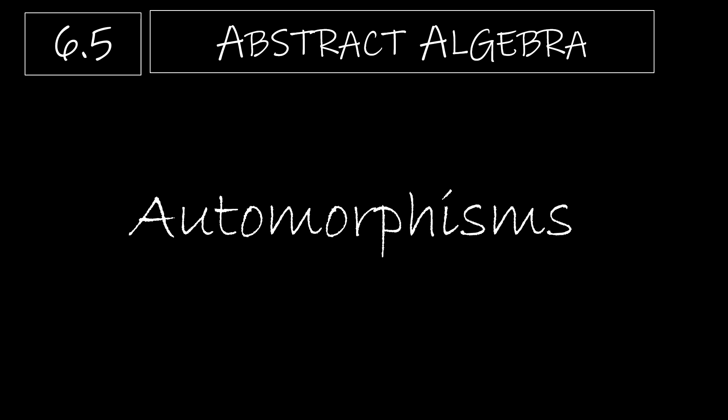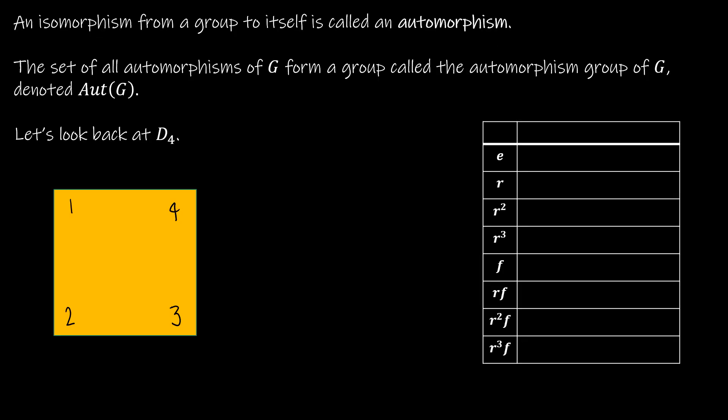In our last video for Chapter 6, we're going to take a look at automorphisms. An isomorphism from a group to itself is called an automorphism — so we have an isomorphism from G to G under some mapping phi. If we collect all of the possible automorphisms of a group G, that is called the automorphism group of G, denoted Aut(G).